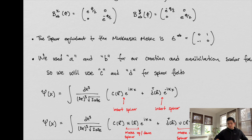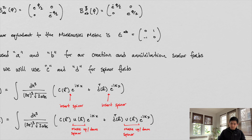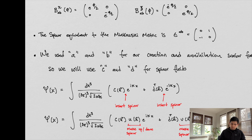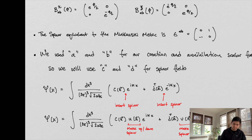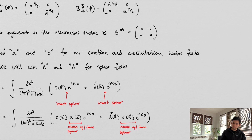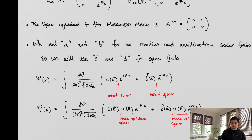We're going to use c and d for our creation and annihilation operators for spinor fields. When we talked about complex scalar fields we used a and b for creation and annihilation operators, so we're going to use c and d for spinor fields just so we can keep track of things and don't repeat ourselves.